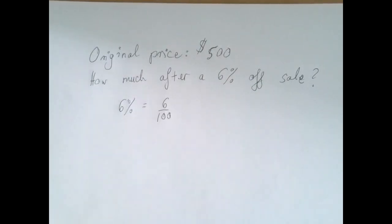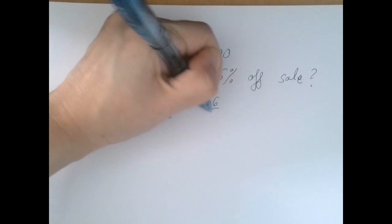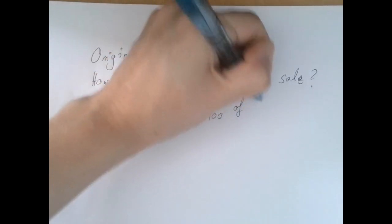6% is the same as 6 hundredths, so we need to figure out what 6 hundredths of 500 is.